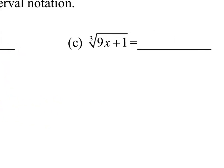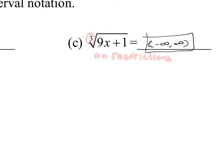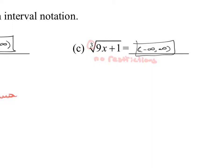Part (c) involves a cube root. Any even root — square root, fourth root, sixth root — restricts you because you cannot take an even root of a negative number. But with odd roots — cube root, fifth root, seventh root — there are no restrictions; you can have negative numbers. Because this is an odd root, there are no restrictions, and the domain is every possible number: (-∞, ∞).